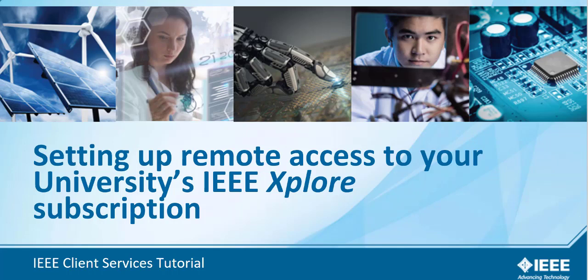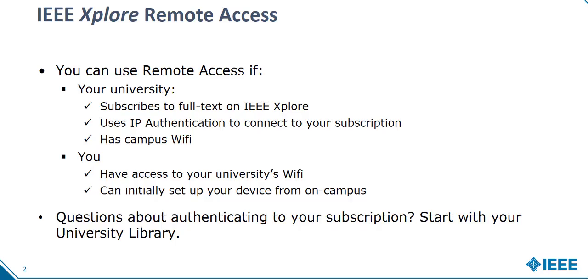Setting up remote access to your university's IEEE Xplore subscription. This feature gives you the ability to access IEEE Xplore when you are off campus or out of authentication range. If your university subscribes to IEEE Xplore and is IP authenticated with campus Wi-Fi, please follow these easy steps to ensure that you have access to IEEE full-text content even if you are away from campus. For users at corporate or government sites, please contact your librarian or account administrator to request off-site access.